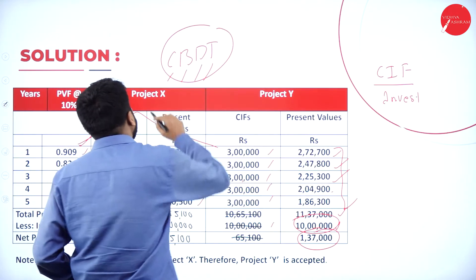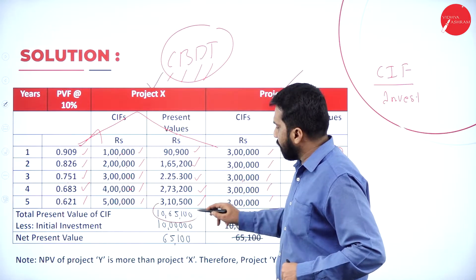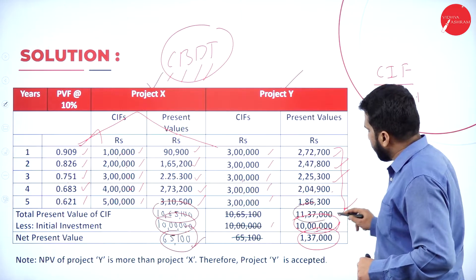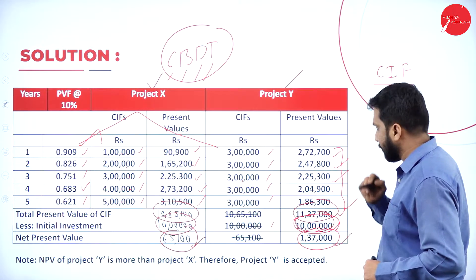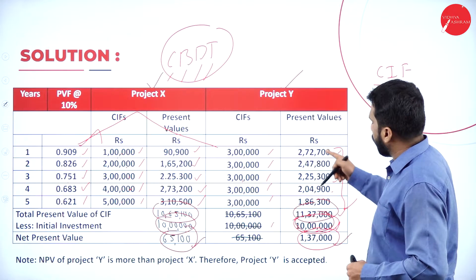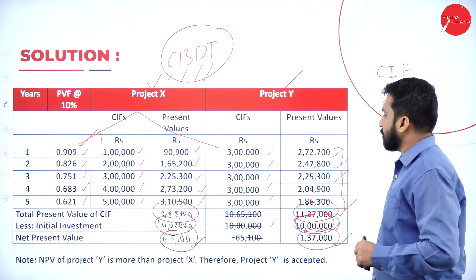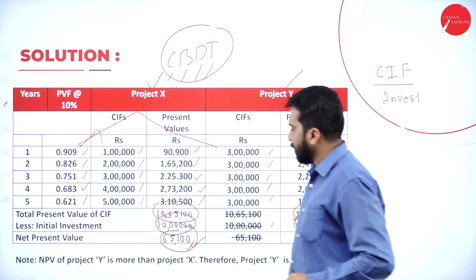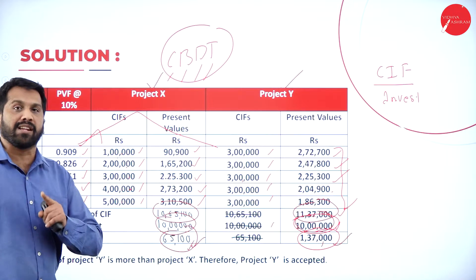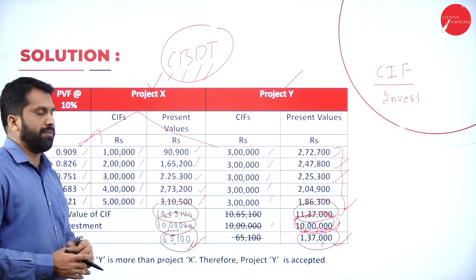For project X: NPV = 10,65,000 minus 10,00,000 = 65,000. For project Y: NPV = 11,37,000 minus 10,00,000 = 1,37,000. If you go for project X, you get 65,000. If you go for project Y, you get 1,37,000. Since NPV of project Y is more, project Y will be accepted.